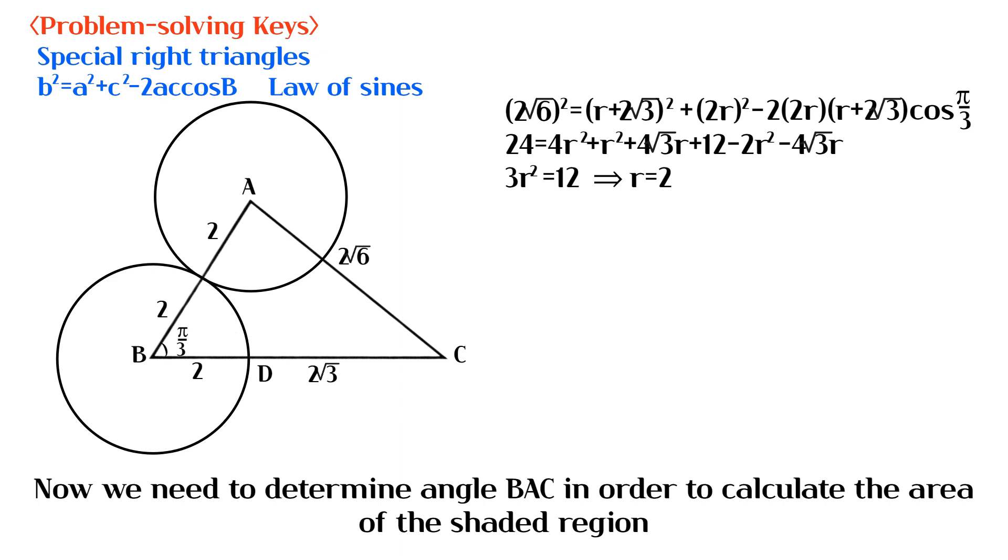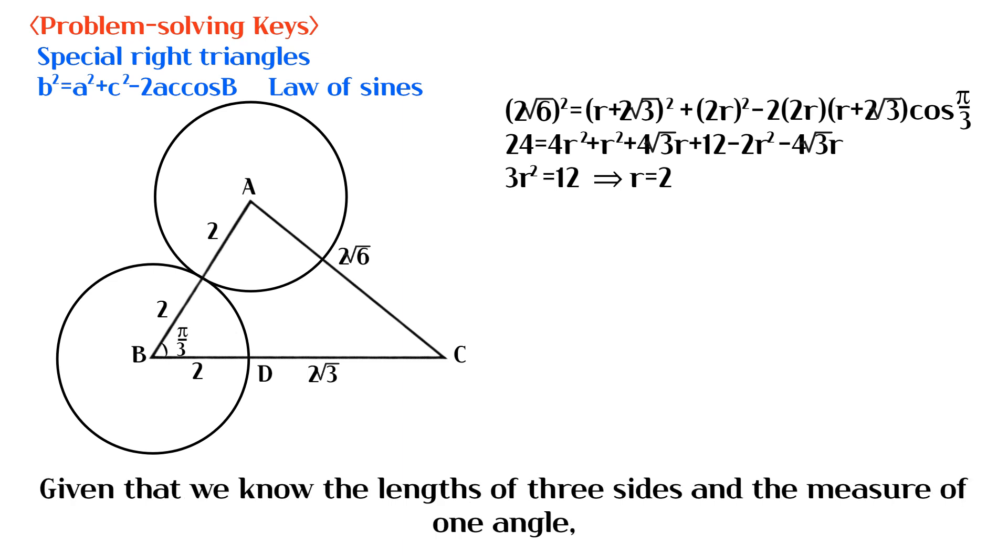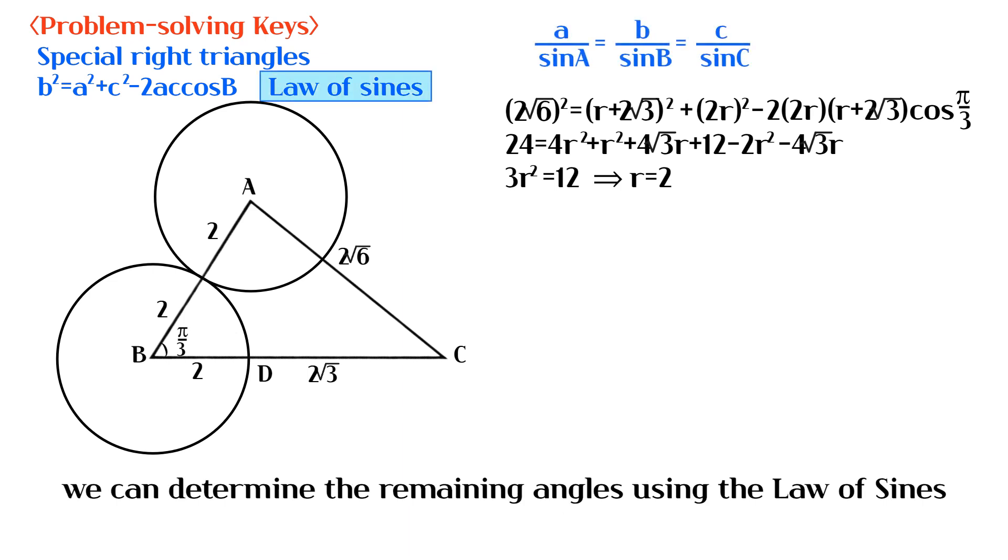Now we need to determine angle BAC in order to calculate the area of the shaded region. Given that we know the lengths of 3 sides and the measure of 1 angle, we can determine the remaining angles using the law of sines.